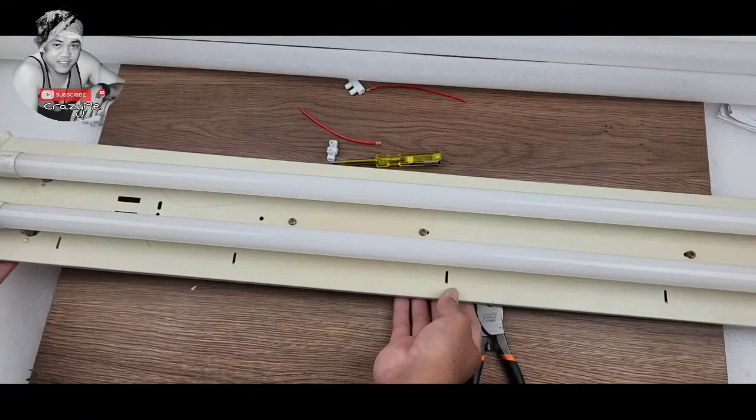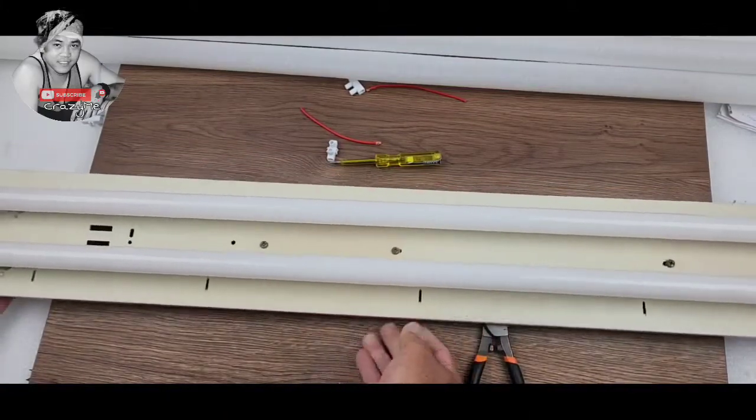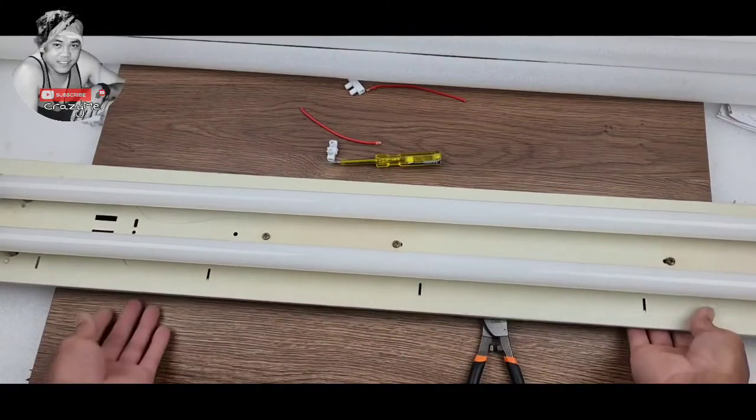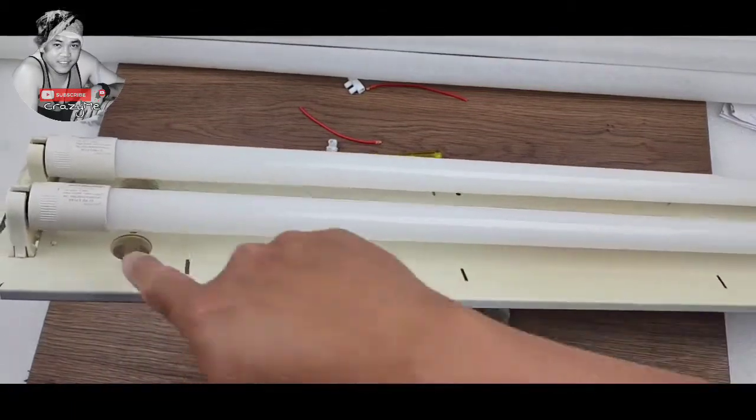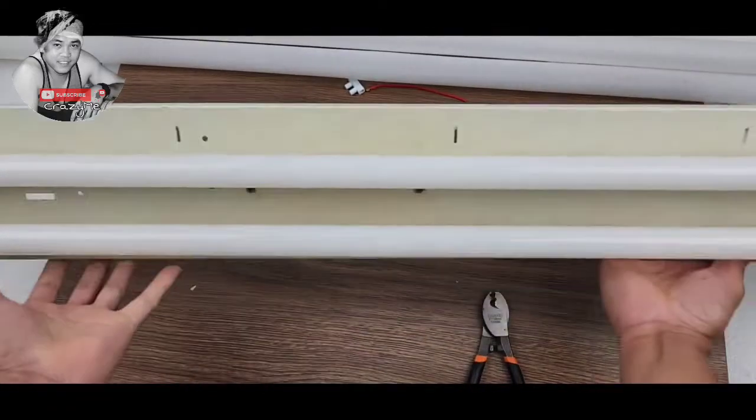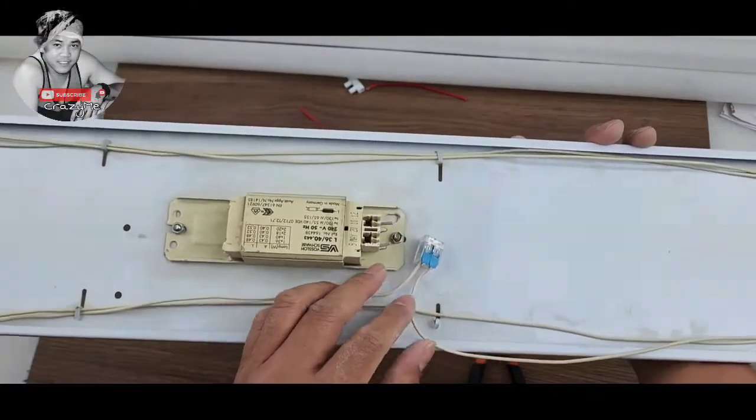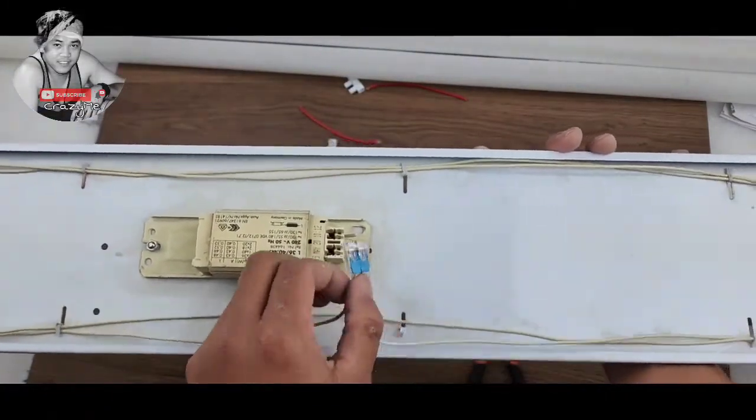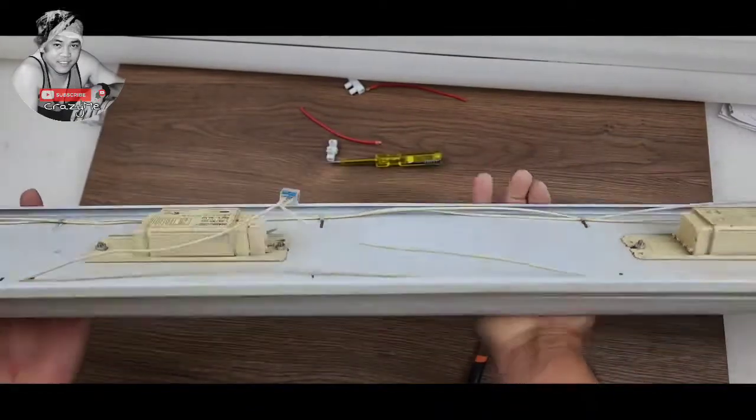Now we have the two LED tube lights, so no more starter, bypass now, starter isolated. And the ballast or choke or transformer is isolated already, so just connect each other. Now we will do the testing.